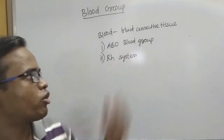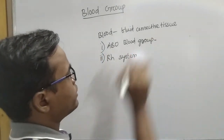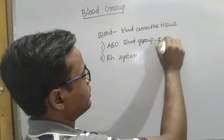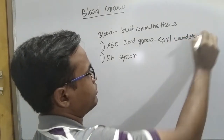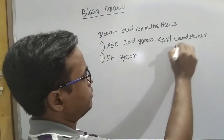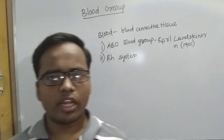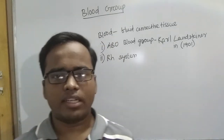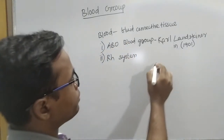The ABO blood group system was first discovered by Karl Landsteiner in 1901. The basis of the ABO blood group system is the presence of an antigen, or surface protein, which is present on the surface of RBCs.